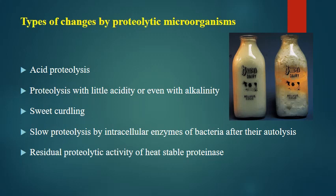Types of changes by proteolytic organisms include: acid proteolysis (acid production and proteolysis together); proteolysis with little acidity or even alkalinity; sweet curdling (curdling without acid production); slow proteolysis by intracellular enzymes of bacteria after autolysis; and residual proteolytic activity of heat-stable proteinases — enzymes that survive heat treatment even after the bacteria are destroyed.